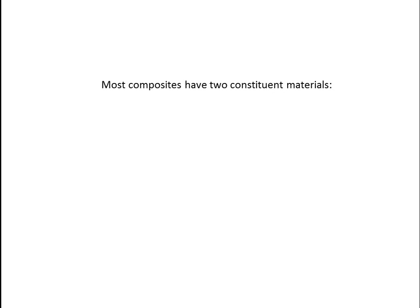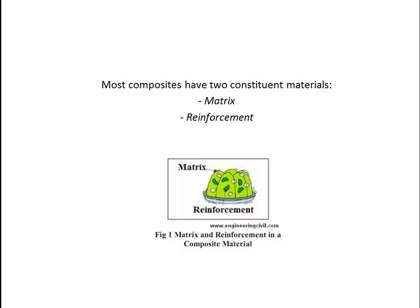Most composites have two constituent materials. The first one is matrix and the second one is reinforcement. Here we can see there are small particles in the material — these small particles are the reinforcement, and the matrix actually holds these reinforcements.